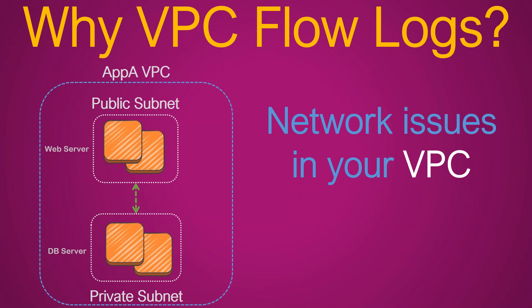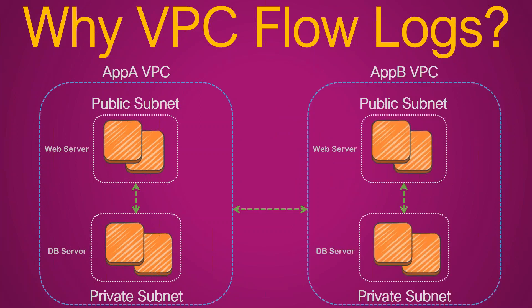It's not just that — let's say you have a peering between two applications, application A and application B, and you want to troubleshoot why they are not communicating. VPC flow logs can help there too. What you do is configure flow logs on application A as well as on application B, then aggregate them and see exactly where the problem is lying.